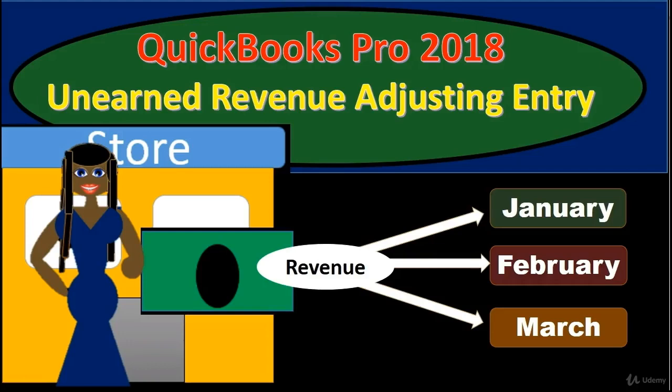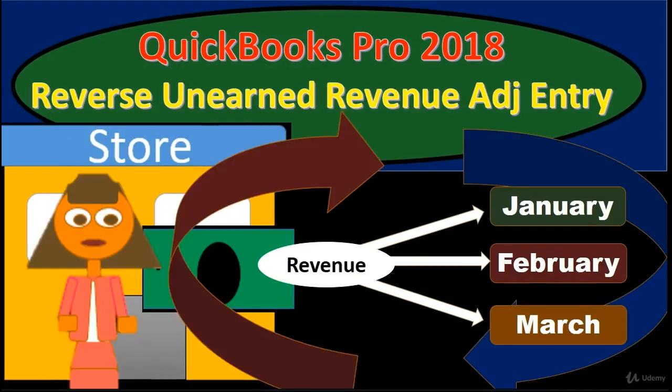What we will do in the adjusting process is take that negative receivable out and put it into a liability account called unearned revenue — that being the proper reporting for accrual basis. The way QuickBooks handles it is useful because it allows us to match up the invoice and the payment. We'll then reverse that unearned revenue adjusting entry, putting the negative amount back into the receivable as of the first day of the next month, preserving QuickBooks' ability to match the deposit with a later invoice.